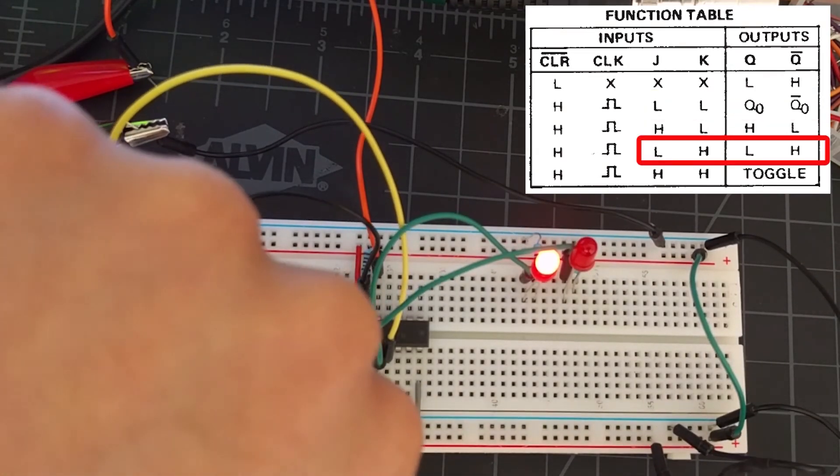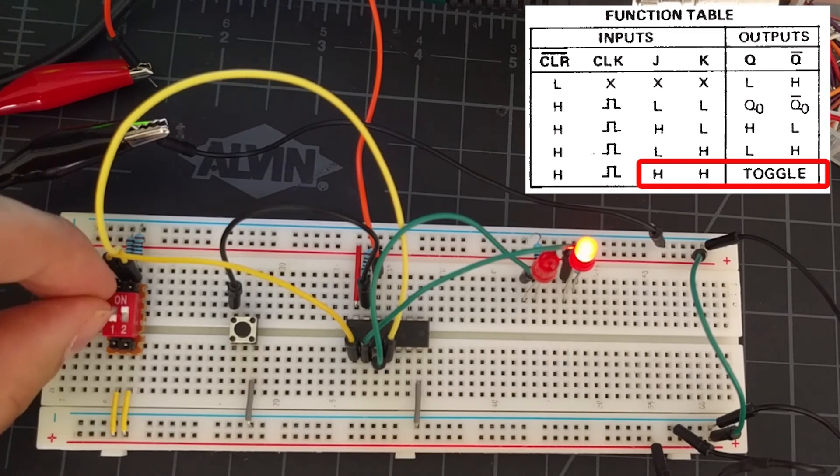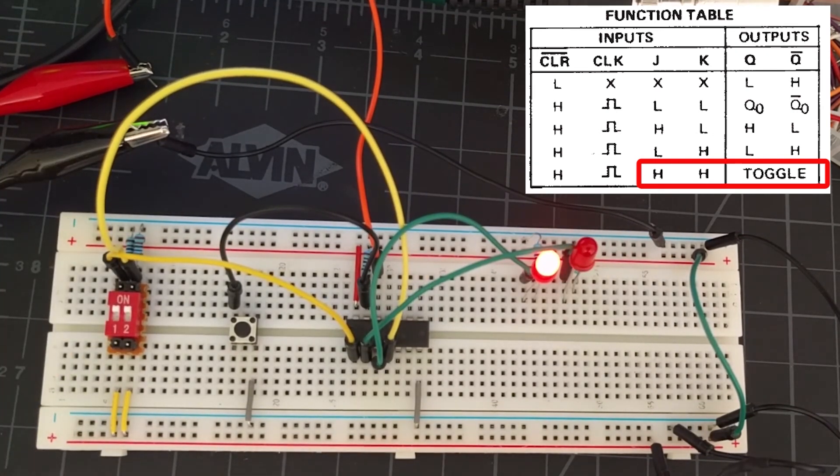Setting J low and K high will cause Q to be low. And setting both J and K high will cause Q and Q-bar to toggle.